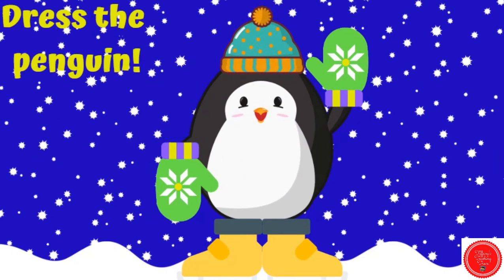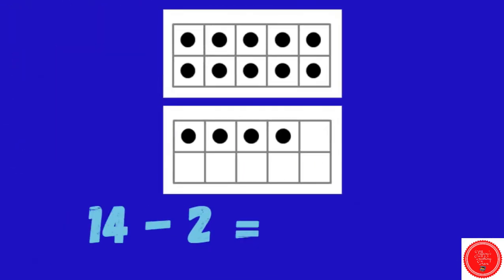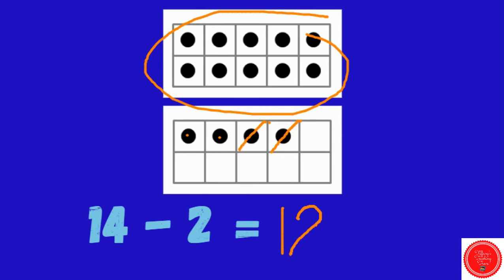There's the other boot. 14 minus 2. We're starting off with 14, we need to take away 2. How many are left? 10, 11, 12. 14 minus 2 equals 12.